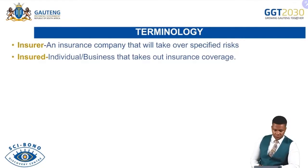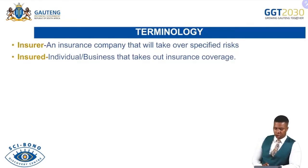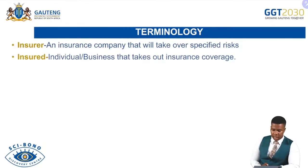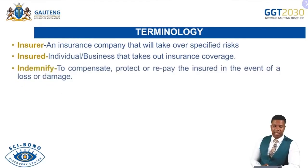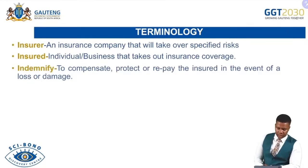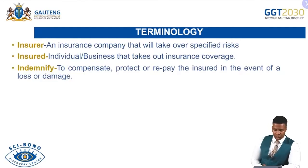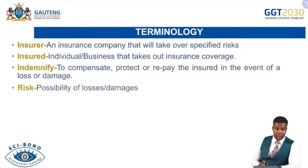The 'insured' refers to individuals or businesses that take out insurance cover. So the insurer is the insurance company, and the insured refers to the person or business that is covered by the insurance. Then we have the term 'indemnity,' which is very key for insurance — to indemnify is to compensate, protect, or repay the insured in an event of a loss or damage. 'Risk' refers to the possibility of losses or damages.